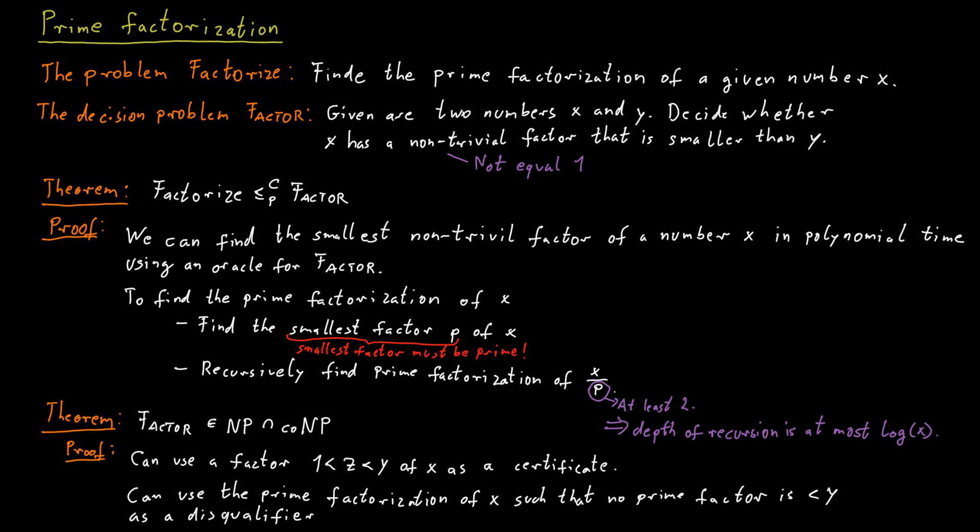We know that all the prime factors are larger than y. The trick here is that we also have to somehow prove to a verifier that what we provided is indeed the prime factorization of x. So we would have to somehow certify that all the numbers in this factorization are indeed prime. But we have previously seen that this is possible using slightly more sophisticated certificates. So for each of the numbers here in this factorization, we would also include a certificate that those numbers are prime.